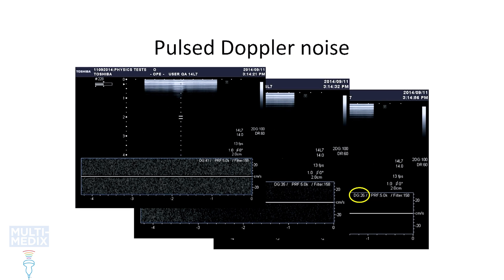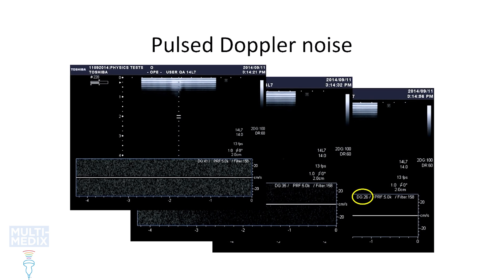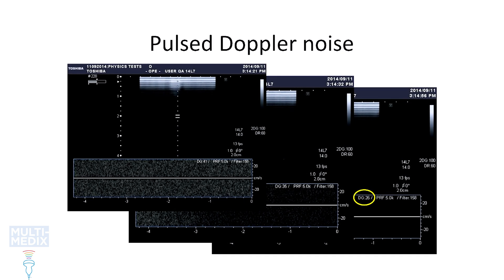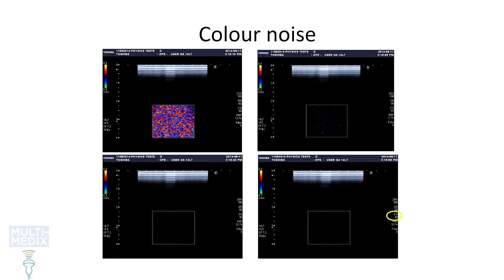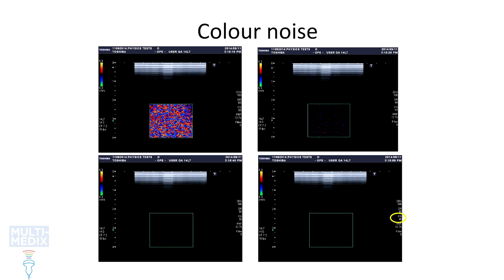As pulsed and colour Doppler are processed in separate channels to B mode, we need separate noise thresholds. For pulsed Doppler this is done with the range gate centrally, and for colour with the colour box at the bottom of the image for consistency. Then the gain is increased to see noise and reduced again until the noise is just eliminated.